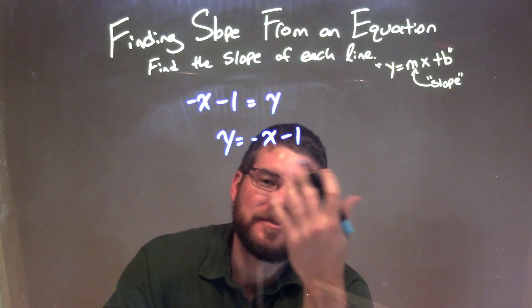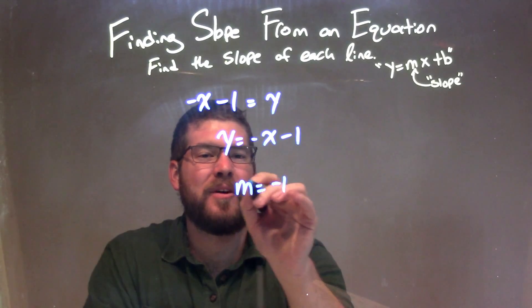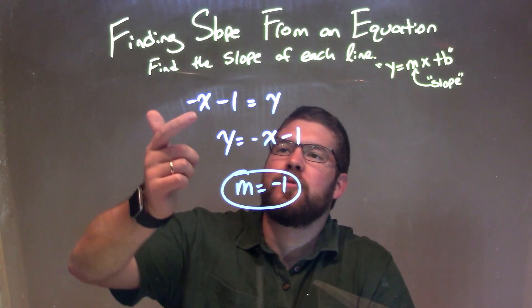Right? There's a negative out there, and it's just 1x, so it's negative 1. And so my slope here is just negative 1, and that's it. It's all for it, folks. So let's recap.